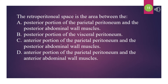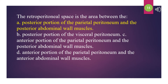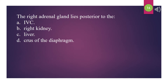The retroperitoneal space is the area between the: A. Posterior portion of the parietal peritoneum and the posterior abdominal wall muscles. B. Posterior portion of the visceral peritoneum. C. Anterior portion of the parietal peritoneum and the posterior abdominal wall muscles. D. Anterior portion of the parietal peritoneum and the anterior abdominal wall muscles. The answer is A. The right adrenal gland lies posterior to the: A. IVC. B. Right kidney. C. Liver. D. Crus of the diaphragm. The answer is A: IVC.